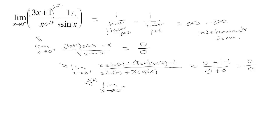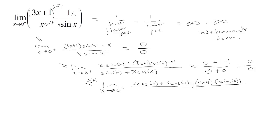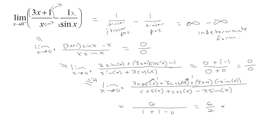We get the limit as x tends to 0 from above. The derivative of the top: the derivative of 3·sin(x) would be 3·cos(x), and the derivative of (3x + 1)·cos(x) would be — by the product rule — 3·cos(x) plus (3x + 1)·(−sin(x)), and the derivative of the −1 is 0. Downstairs, the derivative of sin(x) is cos(x), and the derivative of x·cos(x) — by the product rule — is 1·cos(x) plus x·(−sin(x)), giving cos(x) − x·sin(x). Finally, we can evaluate the limit. As x tends to 0, cosine goes to 1 and sine goes to 0, so we have 3 + 3, that's 6 upstairs. Downstairs we have 1 + 1 − 0, so we get 6 over 2, which is 3.